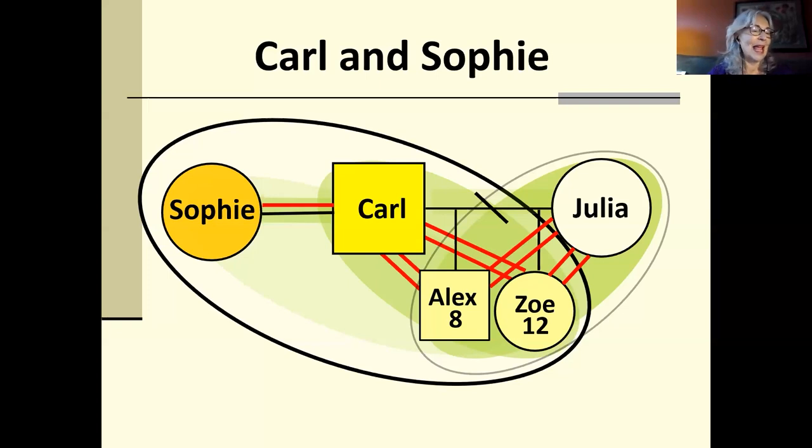Here are Carl and Sophie. In some ways, they look like any other family, and they sure wished they could be like any other family. However, as they learned very quickly, they are not like any other family. They are a blended family or a stepfamily, and stepfamilies can be healthy, strong families. However, they are fundamentally different from first-time families.